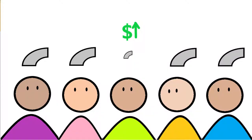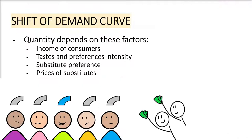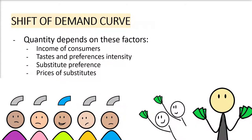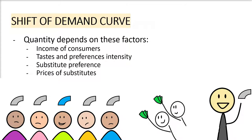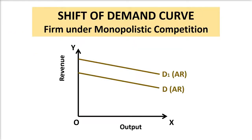If one firm in perfect competition increases its price, it loses almost all its customers because the same identical product is available from another seller at a lower price. But under monopolistic competition, since there is product differentiation, some level of customers can be retained — the demand curve is elastic but not perfectly elastic. The quantity a firm can sell at various prices depends on consumer income, the intensity of taste for the product, preferences for substitutes, and the price of substitutes. A change in any of these conditions will shift the demand curve upward or downward.